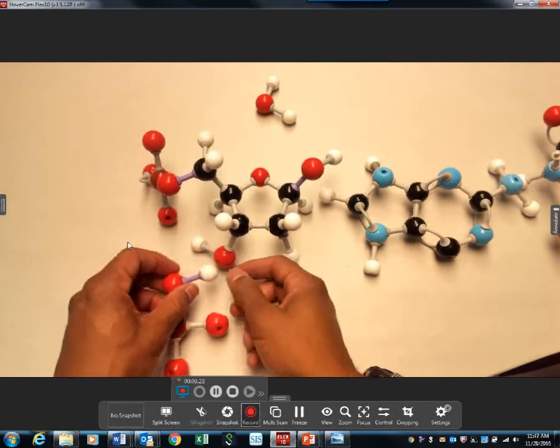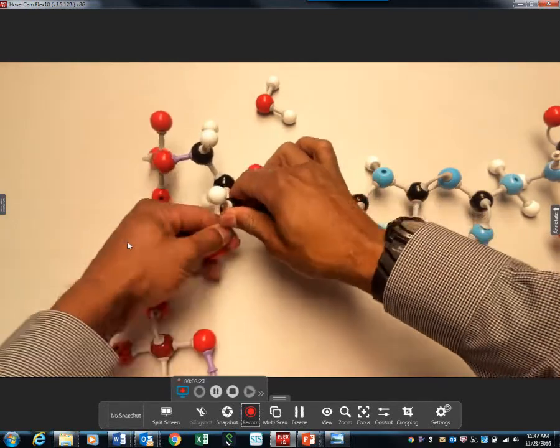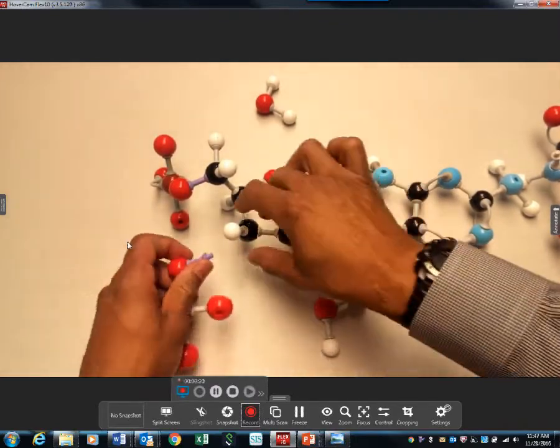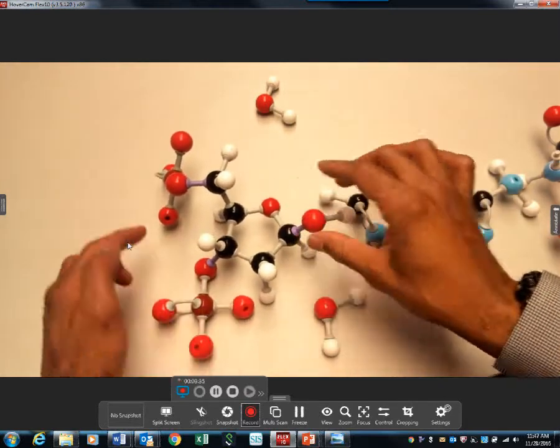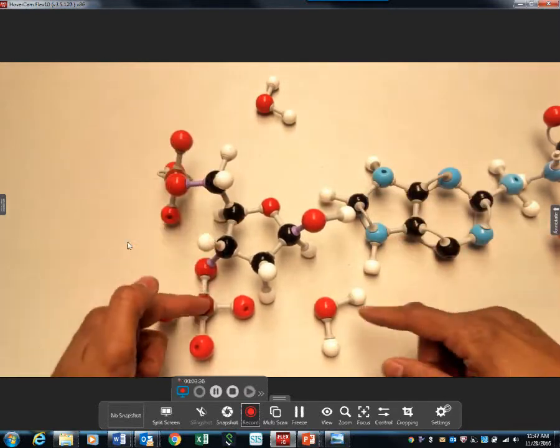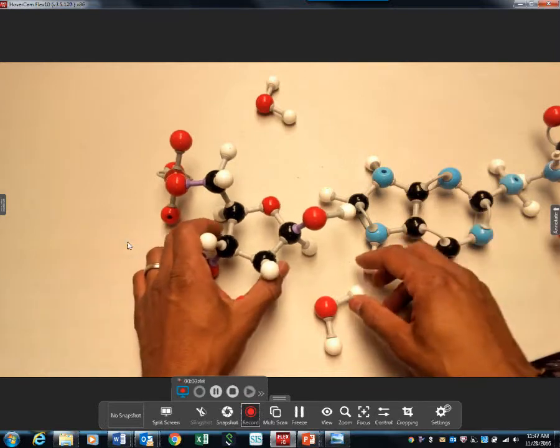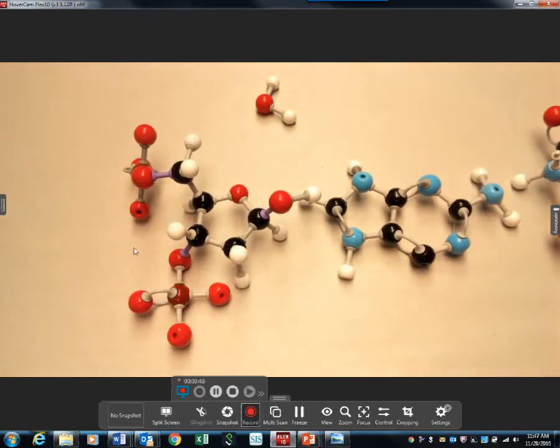Now here's another dehydration synthesis. So the OH comes off with the H from the phosphate. We're actually building the DNA molecule. This is the phosphate-sugar-phosphate. So what would happen here? This would attach to the five carbon of the next sugar. Well, let's go ahead and attach the nitrogen base now.